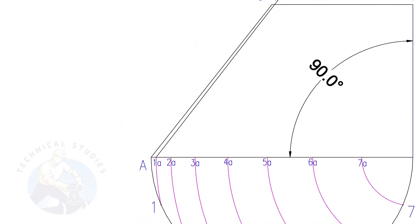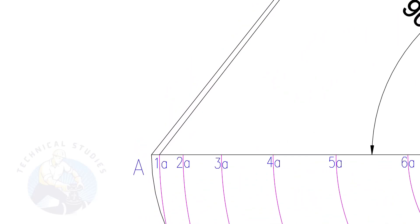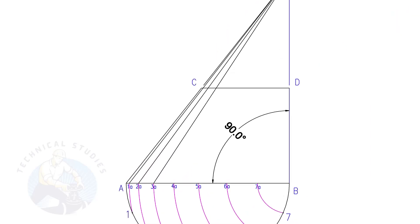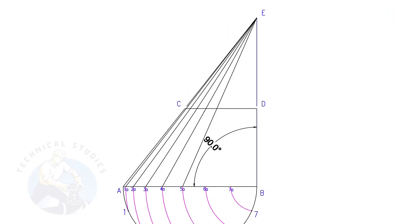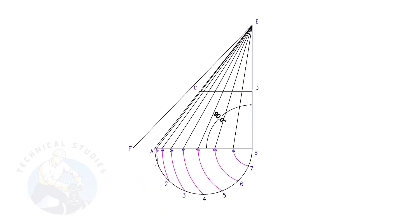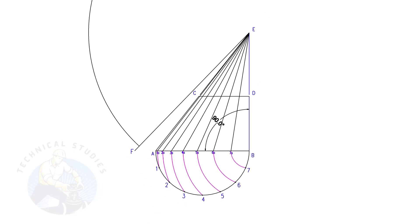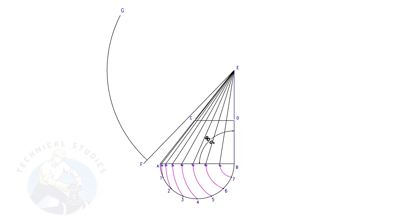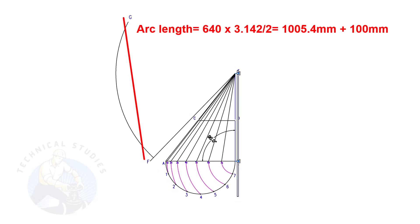Draw lines from 1A, 2A, 3A, etc. to point E. Draw line EF — this is a reference line only. Draw arc FG; the length shall be a little more than the half circumference of the bottom diameter. Again, this arc is only for reference of the half circumference length.